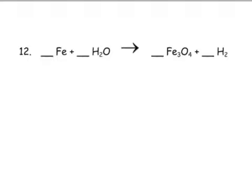So let's start out here. I have one iron on this side, there are two hydrogens, there is one oxygen. On the product side, let's see, there are three irons.